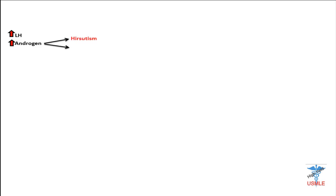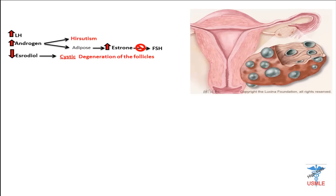To summarize: we have an increase in LH, which increases production of androgen. Too much androgen causes hirsutism, or it travels to adipose tissue, increasing production of estrone, which then has a negative feedback on FSH. Therefore, we have a decrease in estradiol, and we will not have maturation of the egg, leading to cystic degeneration of the follicles. If you look at this picture, here's the ovary and you can see all the cysts inside it.